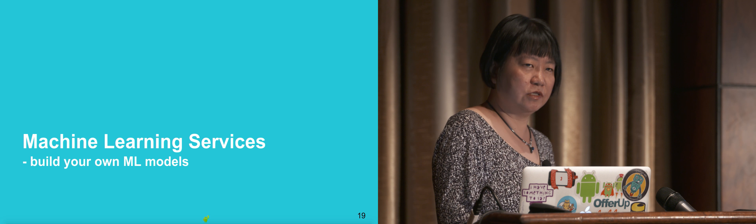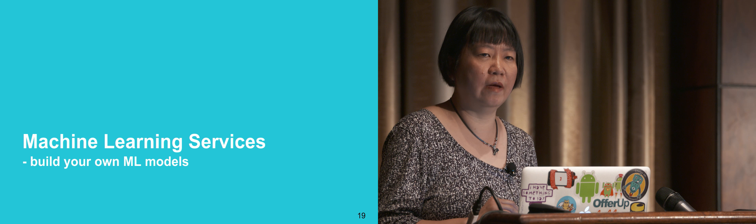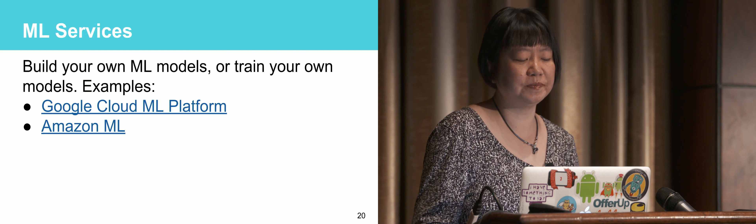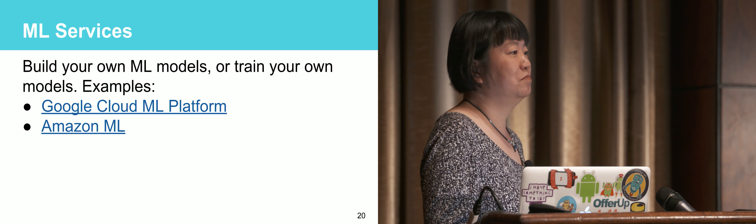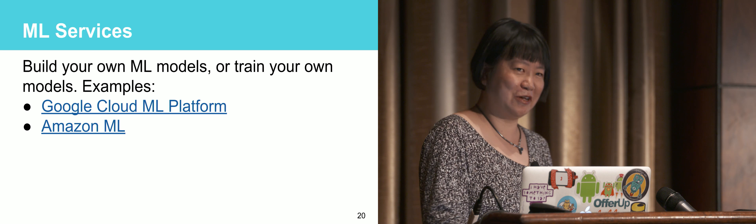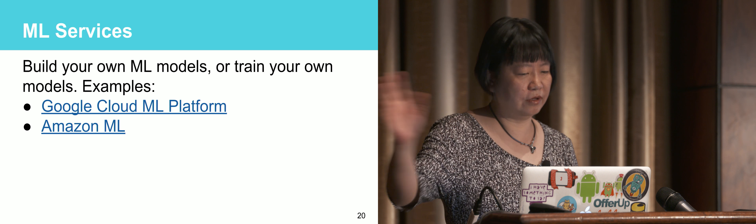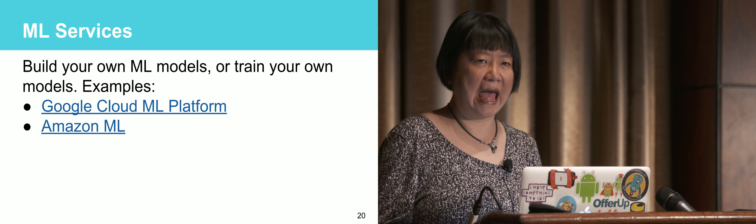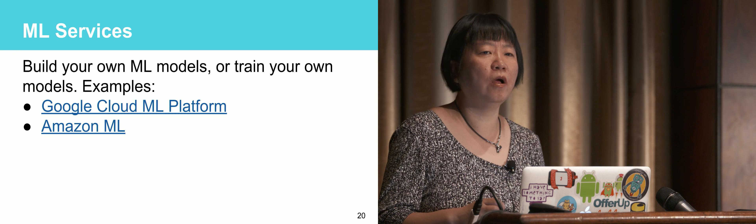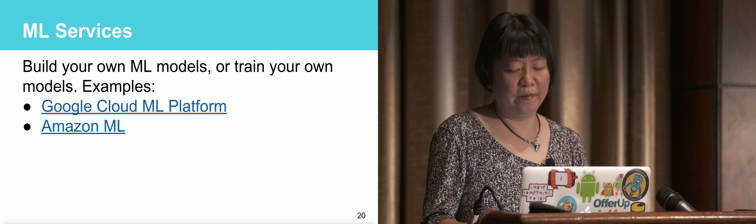Now moving on to machine learning services where you can build and train your own models — for these, you do need machine learning knowledge, unlike the previous two approaches. One is the Google Cloud Machine Learning Platform, which allows you to build and train models. Similarly, the Amazon Machine Learning service has templates to help you build a model, provide training data, and train it, which you can then use in your app.